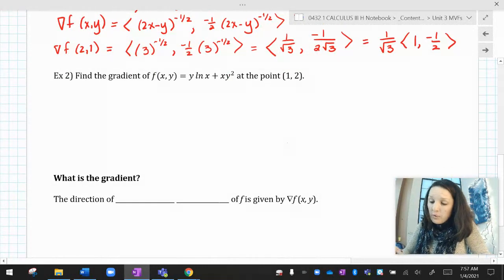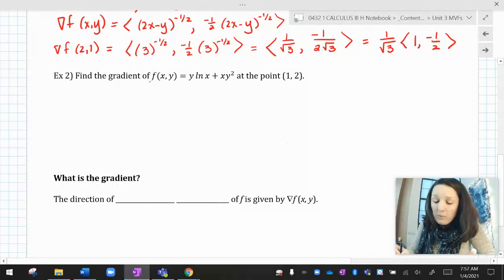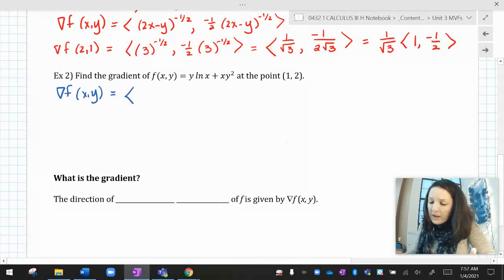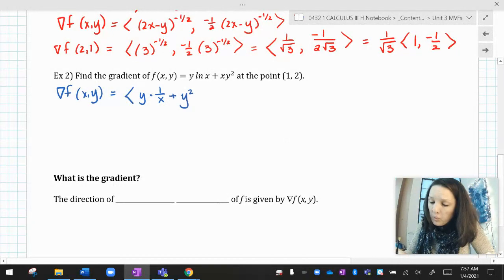At the point 1, 2 again. Last time it was 2, 1. Now we have 1, 2. No big deal. So if I want the gradient, the gradient of f with respect to x and y, is going to be first the derivative with respect to x. This is going to be y times 1 over x plus y squared. Here's the derivative with respect to x.